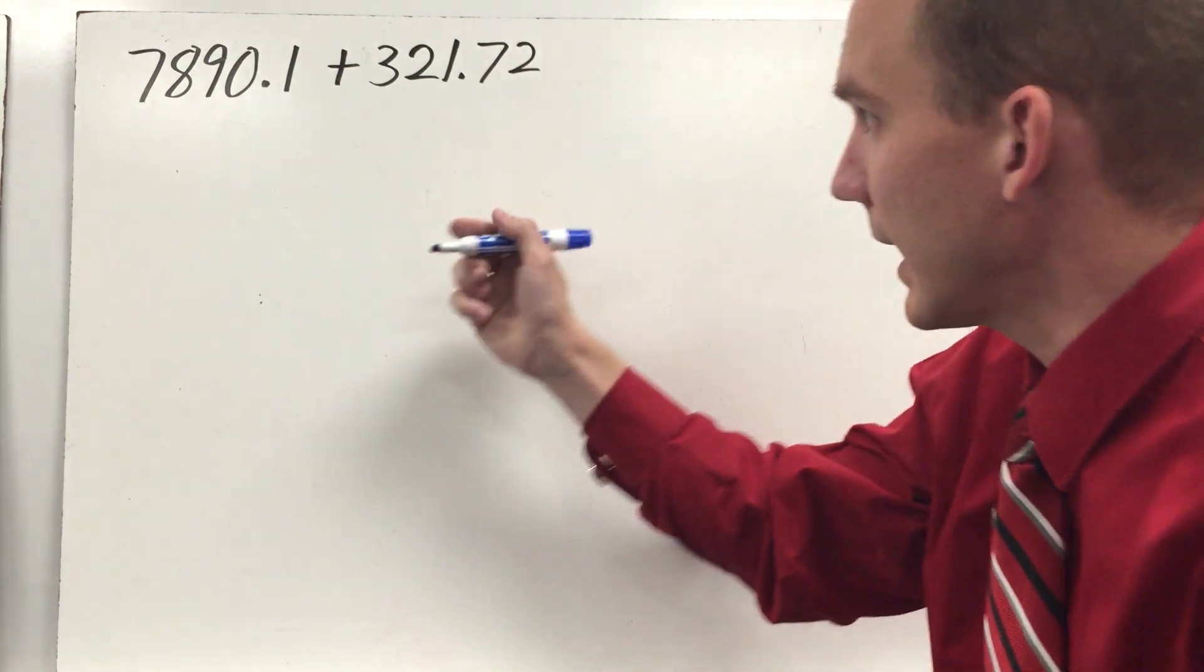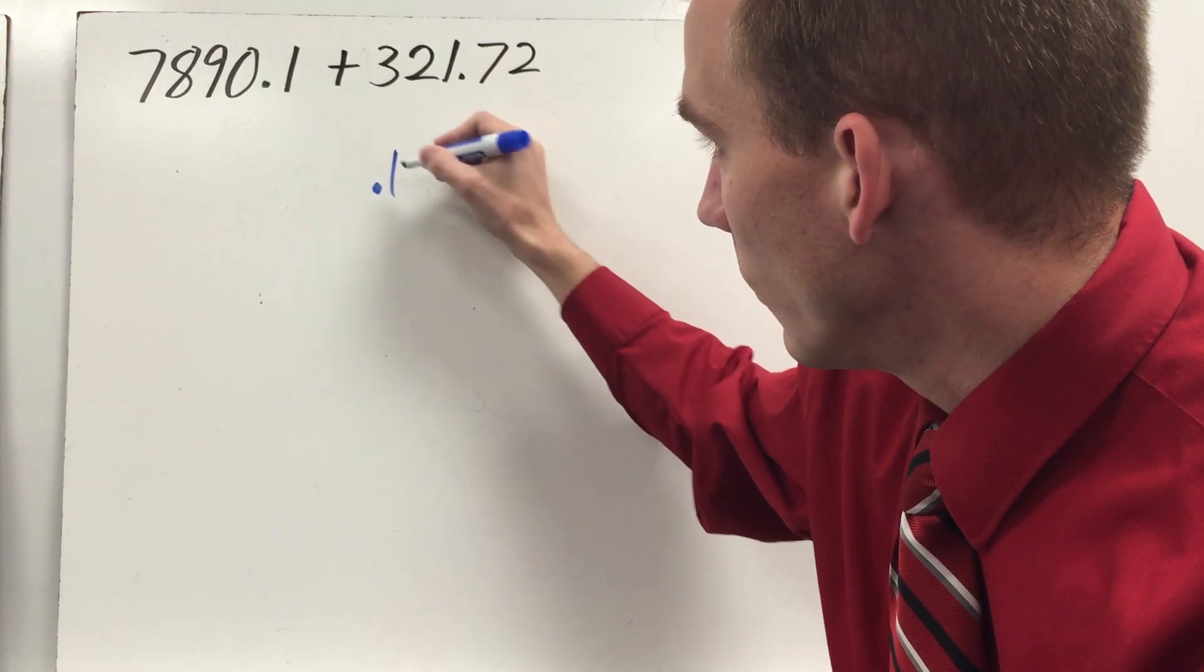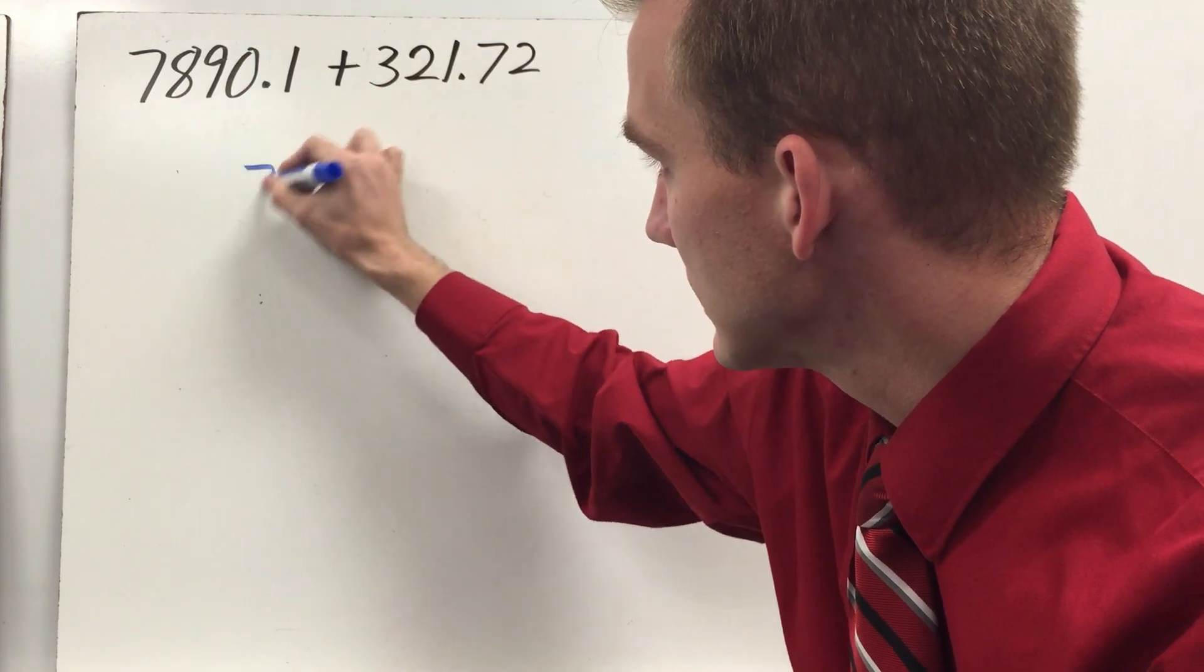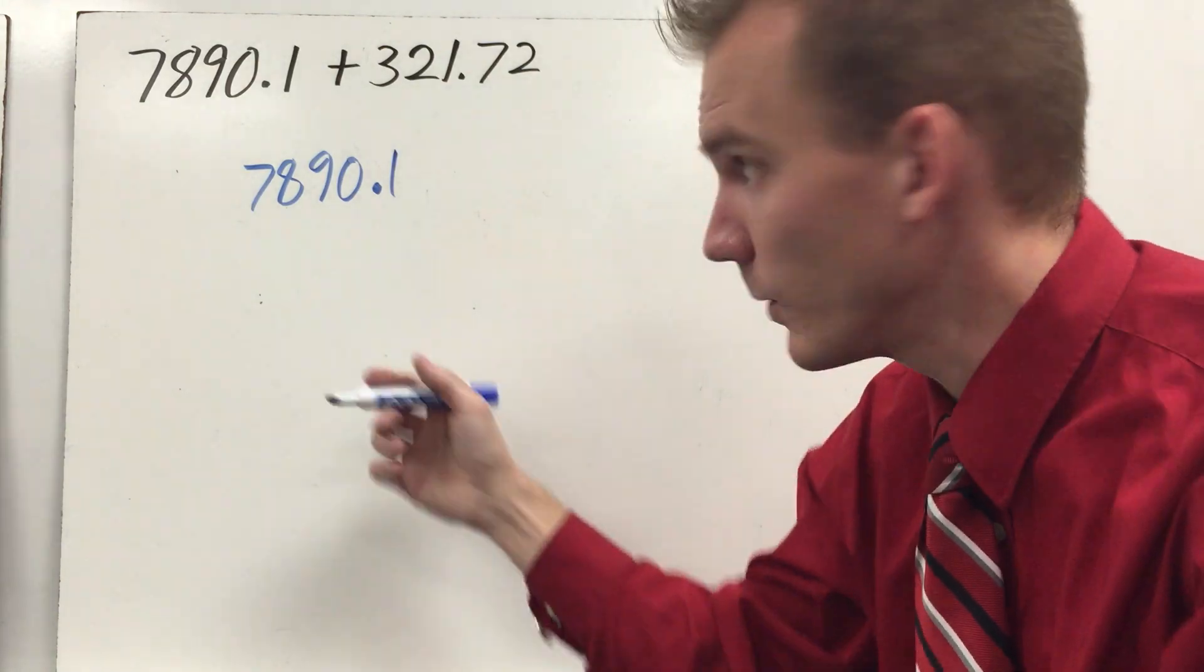I'm going to show you how to set this one up and add it. So first, we're going to write the decimal point. One, zero, nine, eight, seven. 7,890.1 - seven thousand eight hundred ninety and one tenth is the way it's written.